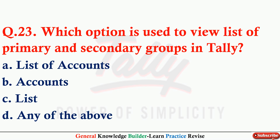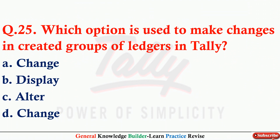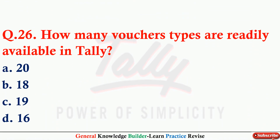Q23: Which option is used to view the list of primary and secondary groups in Tally? Option A: List of Accounts. Q24: Which ledger is created by Tally automatically as soon as we create a new company? Option D: A and B both. Q25: Which option is used to make changes in created groups and ledgers in Tally? Option C: Alter. Q26: How many voucher types are readily available in Tally?